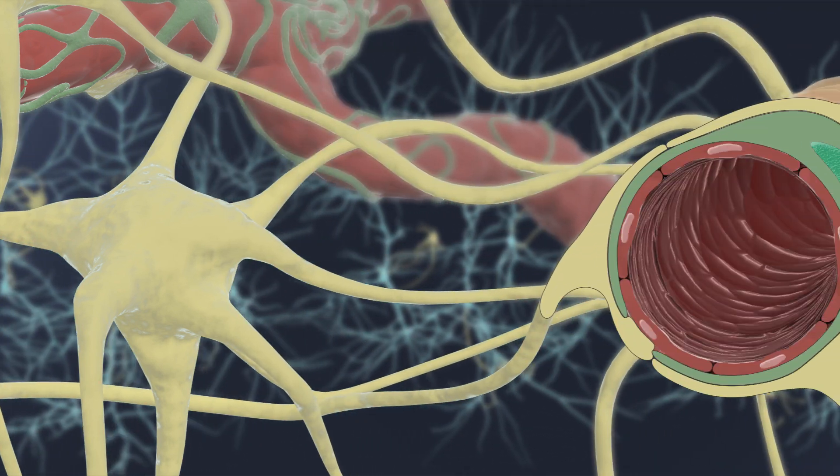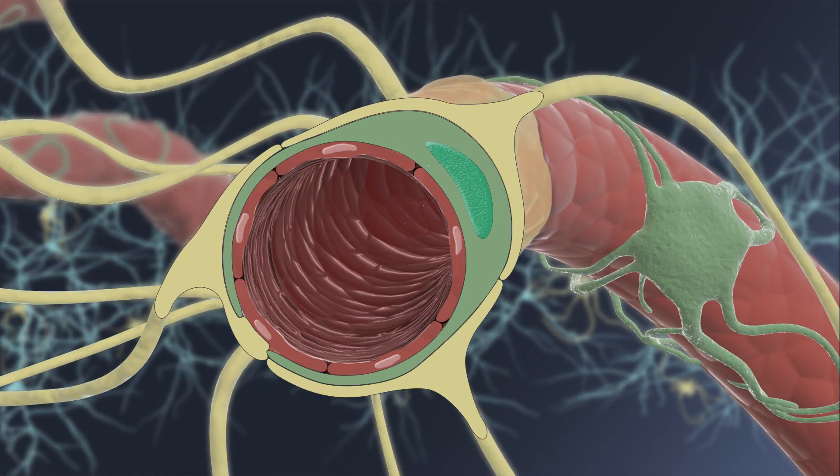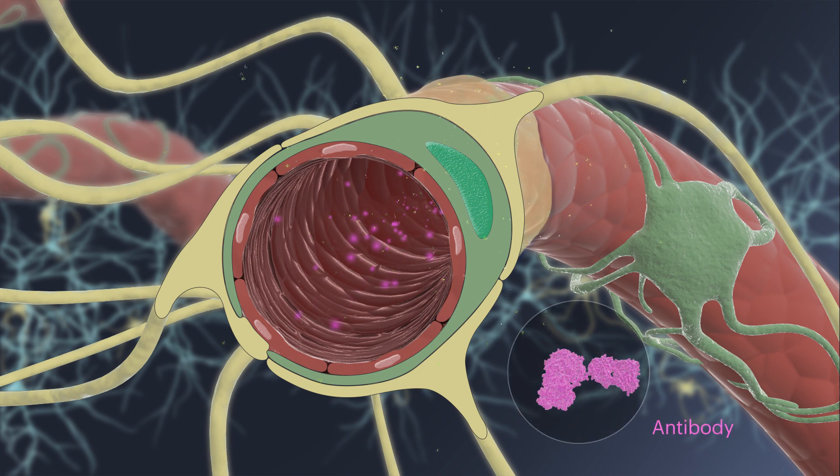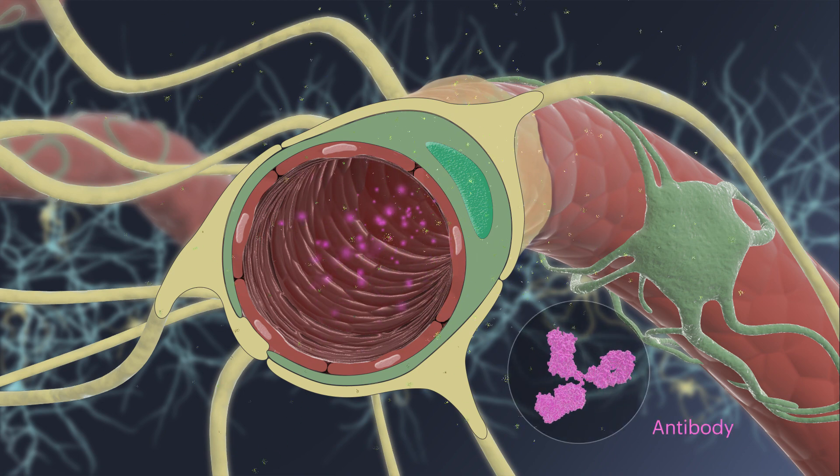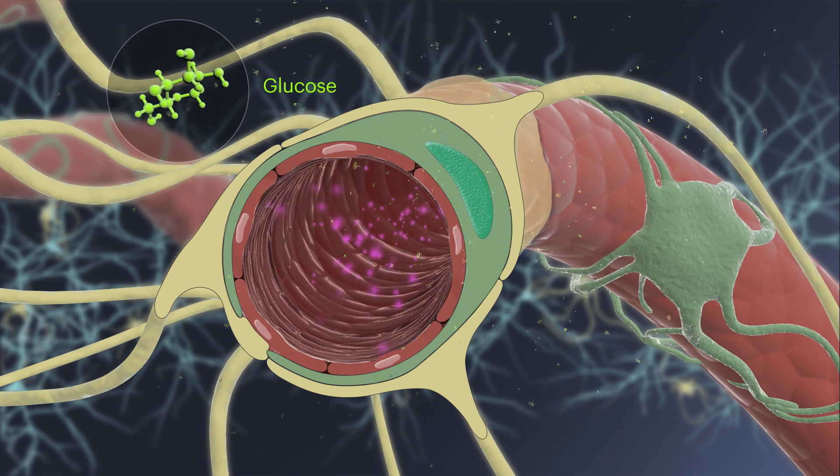This barrier is highly selective and prevents toxins and other large molecules, such as antibodies, from entering the brain tissue while allowing certain small substances, such as glucose, to pass through.